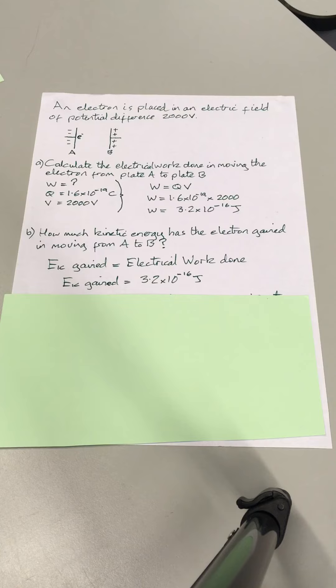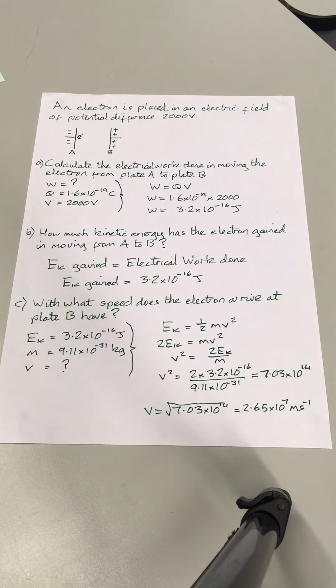Last part, slightly more tricky, but not anything that you haven't really done before. We're going to ask you to use the fact that you know how much kinetic energy is gained to work out the speed that the electron has on arriving at plate B.